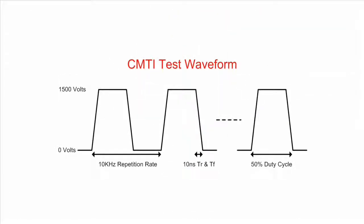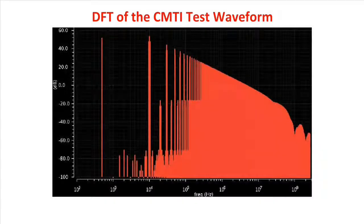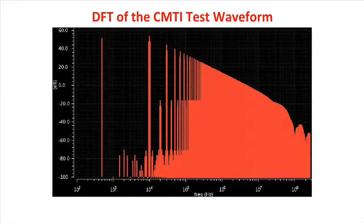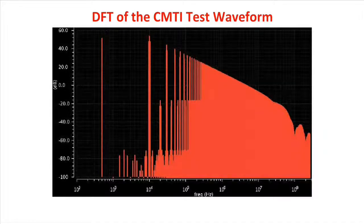CMTI places a repeating trapezoidal voltage waveform between the two grounds at a rate of 10 kHz. We know that the FFT of a trapezoidal waveform contains frequency components at the odd harmonics of the repetition frequency whose amplitude rolls off at 20 dB per decade. With the given rise time, fall time, and repetition rate, the device is only being subjected to a discrete number of fixed frequency components that roll off significantly in amplitude well before 100 MHz.